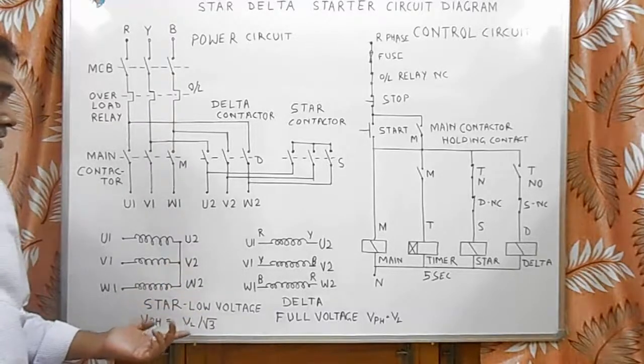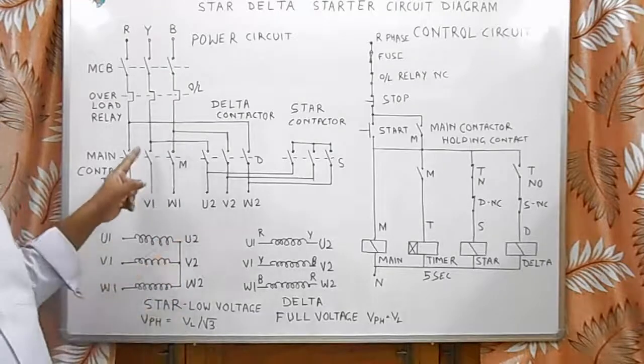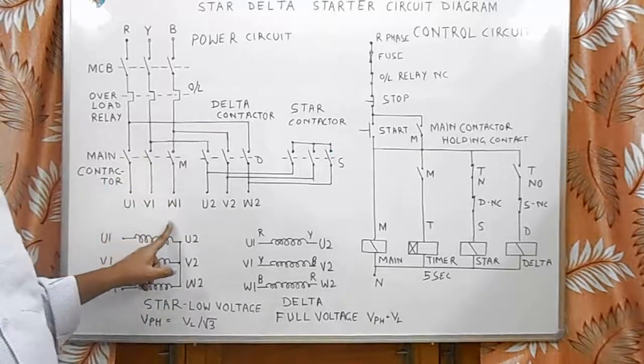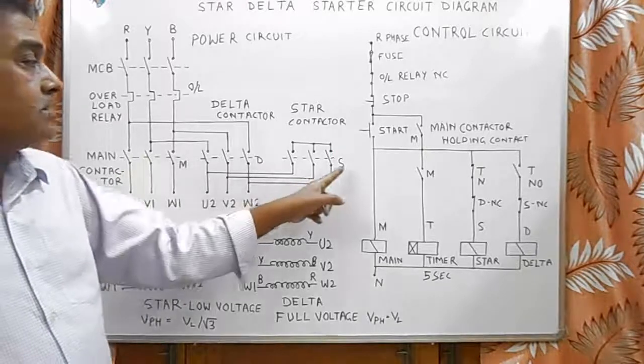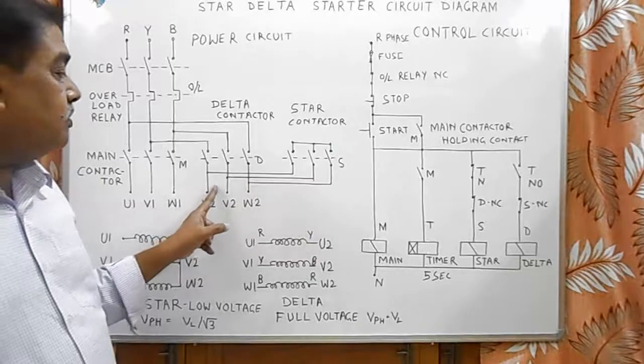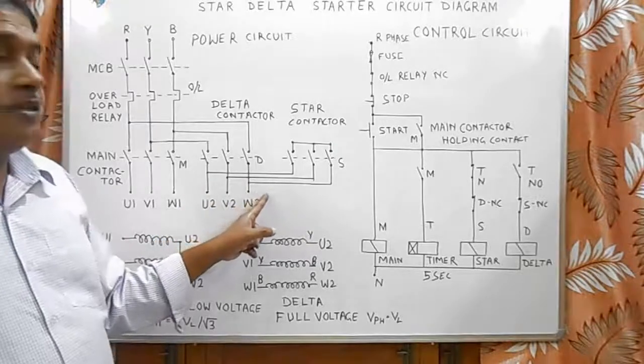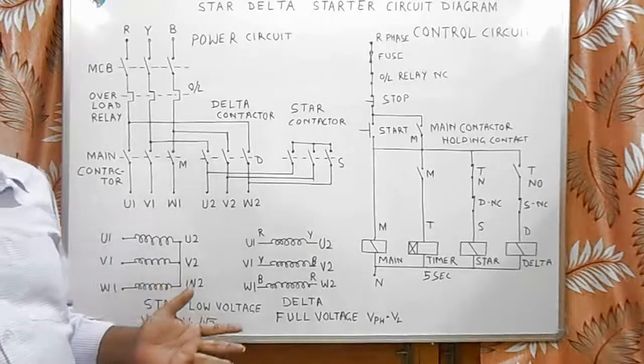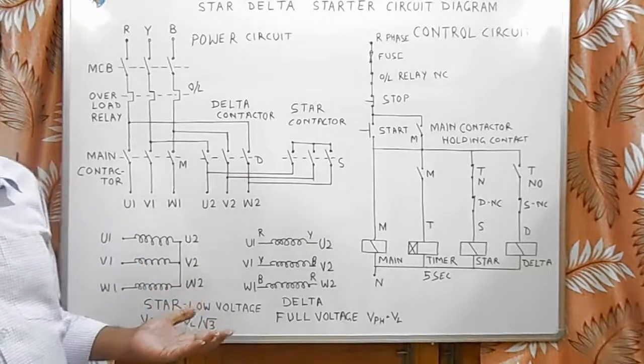For obtaining this star connection, we use main contactor to give supply to U1, V1, and W1, and use star contactor to short-circuit U2, V2, and W2. With this scheme, we achieve star connection and start the motor at low voltage.